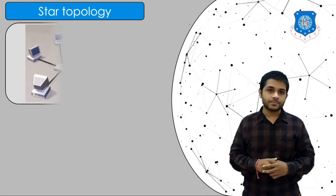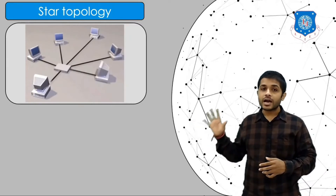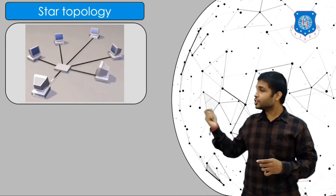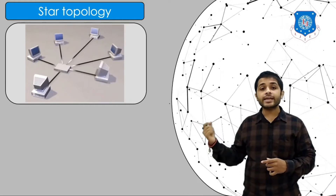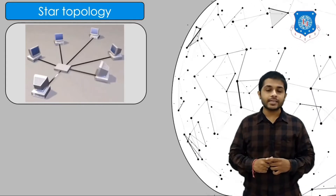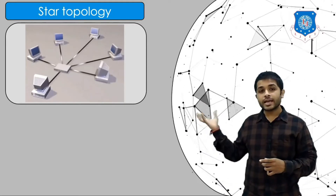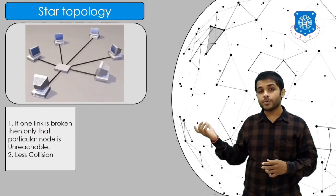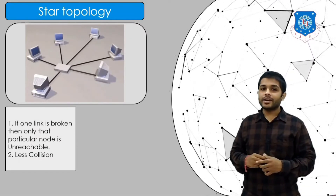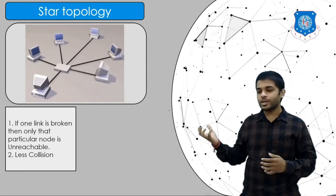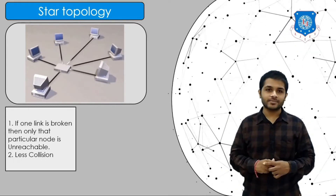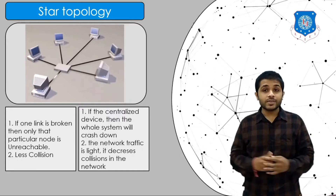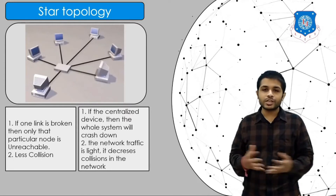The next topology is star topology. In star topology, all devices are connected to a centralized device, which can be a hub or switch. Each device is connected to the centralized device using a dedicated link, so each device can send and receive data at any time. The advantage is that if one link is broken, only that particular node is unreachable, and collision is less because each device has a dedicated link. The disadvantage is that if the centralized device fails, no device can communicate.